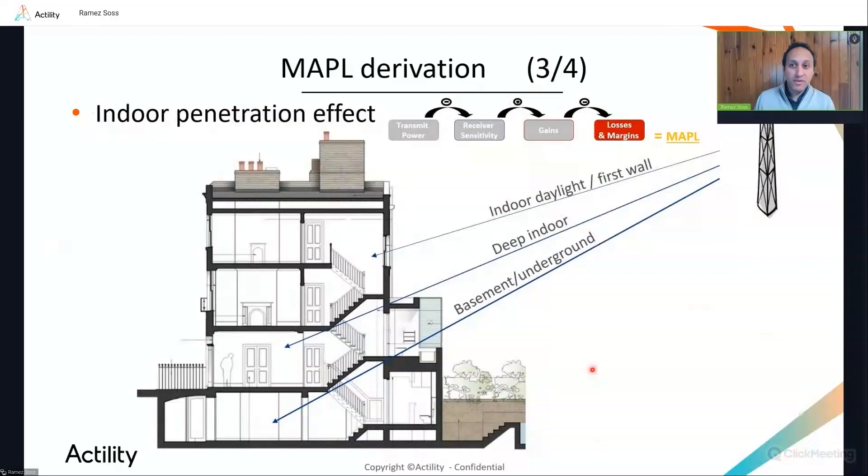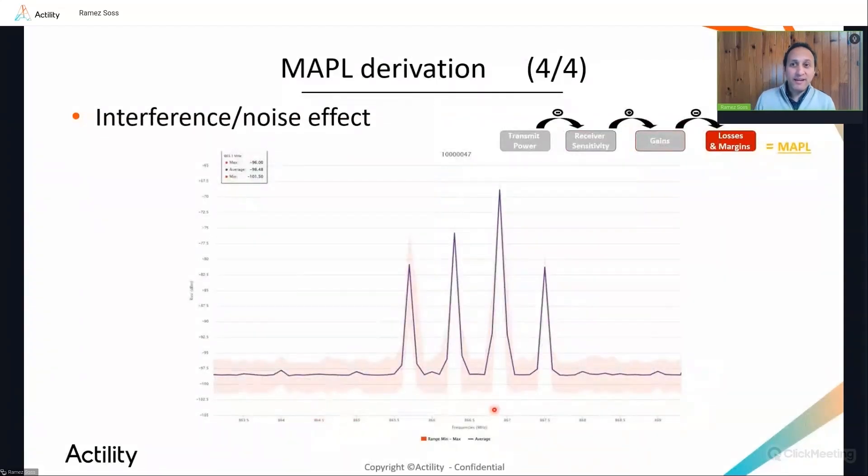Let's now tackle the in-building penetration losses, which are typically considered by additional margins on top of outdoor path loss. So different penetration levels require different margins. For example, for indoor daylight, or what we also typically call light indoor or indoor first wall, we typically add 11 to 18 dB on top of the outdoor path loss depending on the morphology. And for deep indoor, you can typically consider 5 dB on top of the indoor daylight losses, but the exact values typically depend on the wall material. And for basement, like for metering applications, consider 10 dB extra losses on top of the deep indoor penetration. But here again, the exact values depend on the building material, the floor-to-floor isolation, and the number of underground levels to cover.